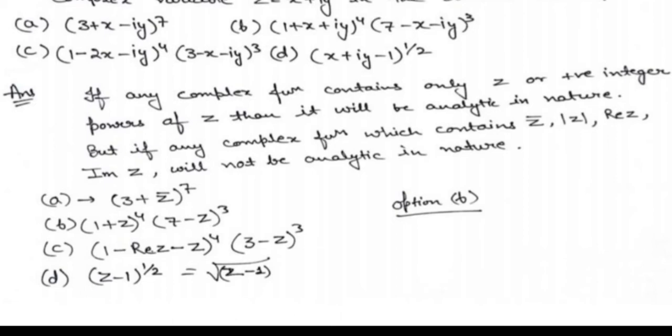In option C, the real part of z — which means only x — appears alone, so it is not analytic. In option D, the power is 1/2 (a fractional power), so that is also not analytic. Therefore, option B is the analytic function in this case.